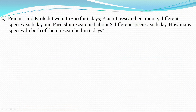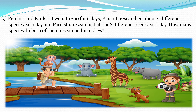The third situation: Prachiti and Parikshit went to the zoo for 6 days. Prachiti researched about 5 different species each day and Parikshit researched about 8 different species each day. How many species do both of them research in 6 days? This is the same kind of situation, so 5 plus 8 into 6 is matchable.